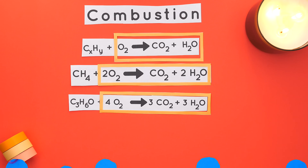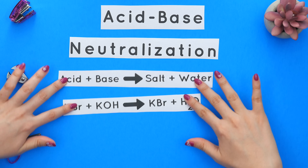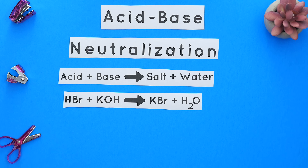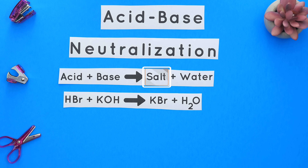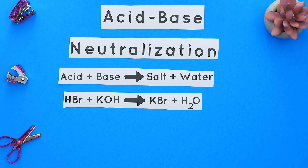Now in an acid-base neutralization reaction we have an acid plus a base and those form a salt and water. Now if you're unsure what an acid, base, or salt looks like — an acid typically starts with an H or hydrogen, and a base will end with OH or hydroxide.